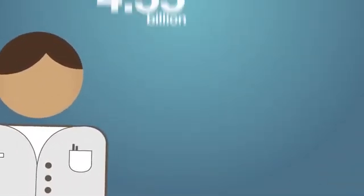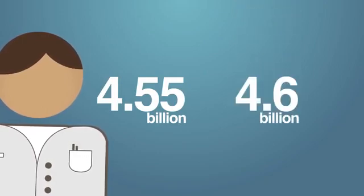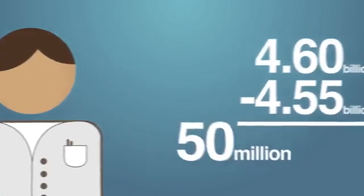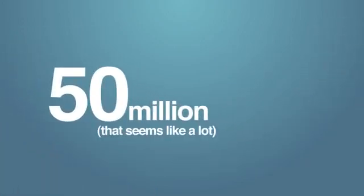First off, many scientists now regard the age of the Earth to be between 4.55 and 4.6 billion years old. Okay, so if this method is reliable and accurate, why the 50 million year discrepancy? That seems like a lot, but let's get into some details here and see what's going on.